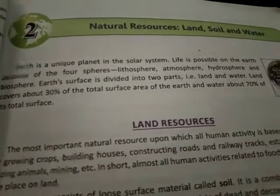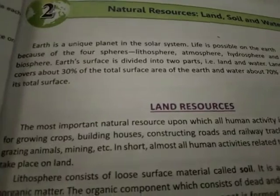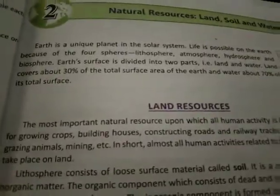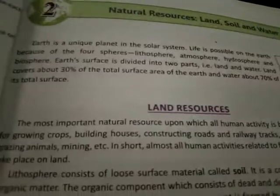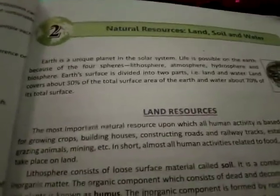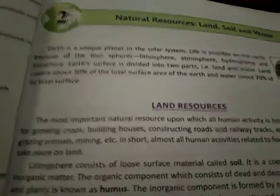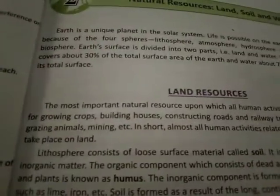You can see the picture of planet Earth here. Earth is a unique planet in the solar system. The reason Earth is unique is because it has life and water. Life is possible on the Earth because of four spheres: the lithosphere, atmosphere, hydrosphere, and biosphere. Because of these four spheres, life is possible on Earth.